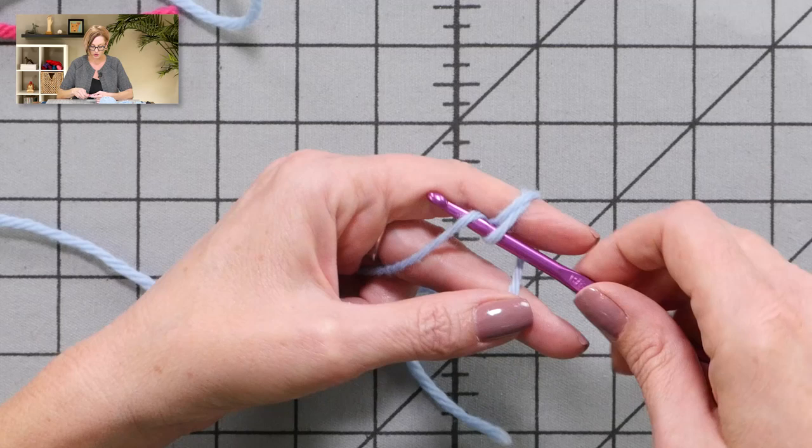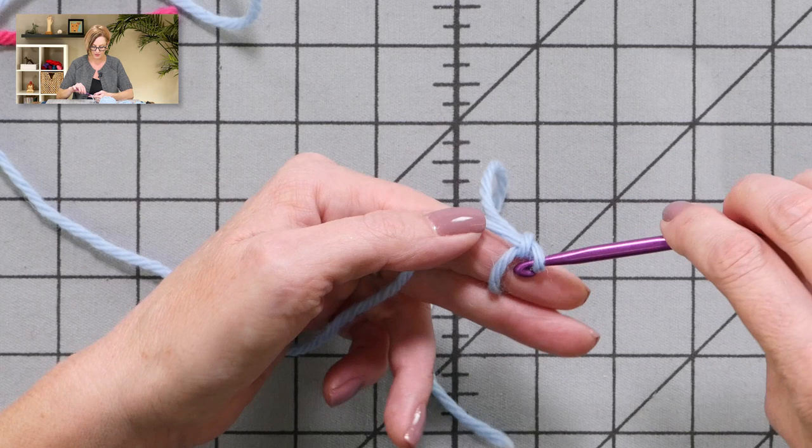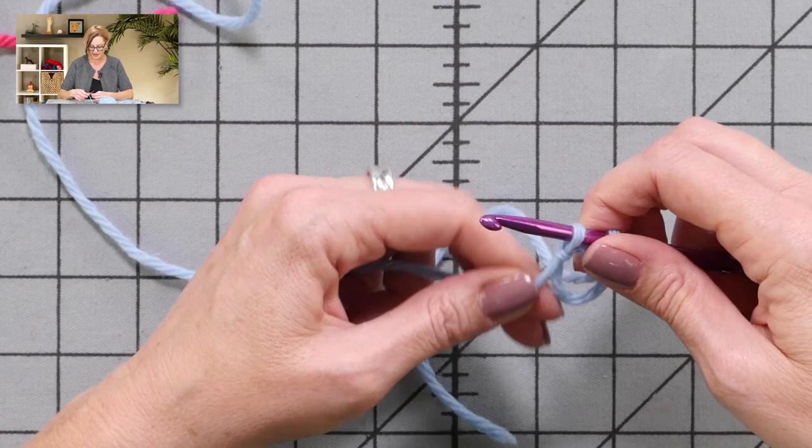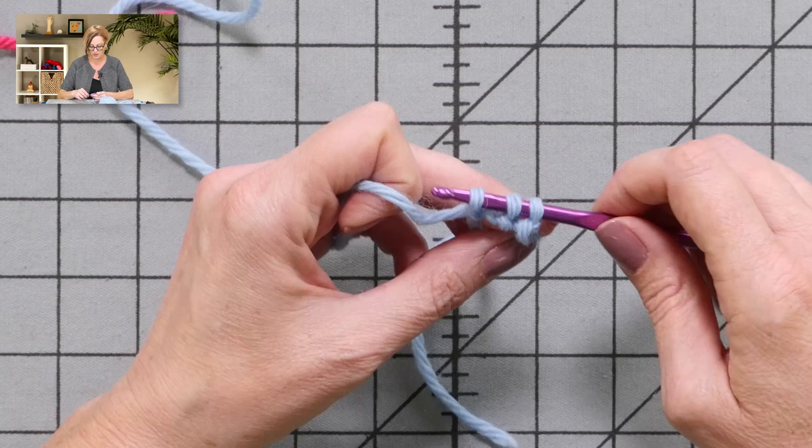We're going to pretend that I have to cast on eight, which I think is a number for the French market bag. Go under that yarn, pull up a loop, and then grab the yarn and pull it through. Once you have a couple of stitches, I like to go ahead and pull my finger out. It's just easier to pinch it this way. Go under that loop, pull up a loop, grab the yarn, pull through that loop. We are accumulating stitches on the crochet hook.